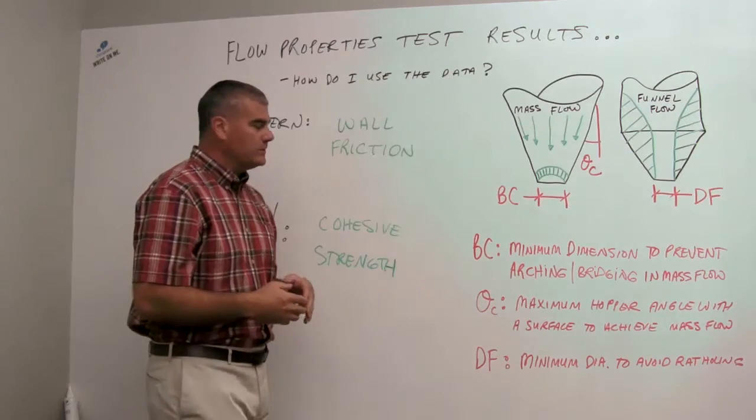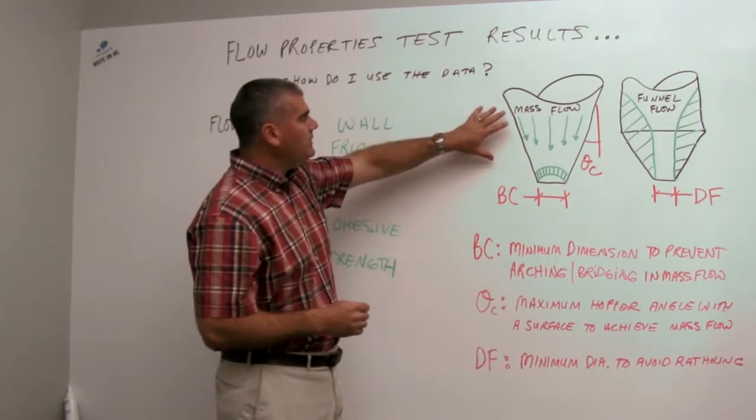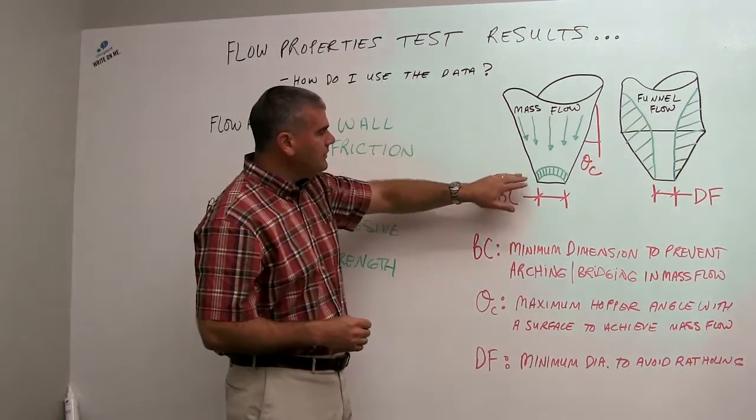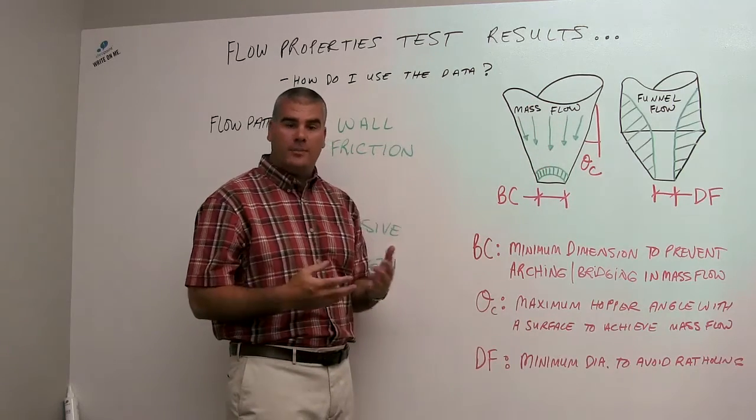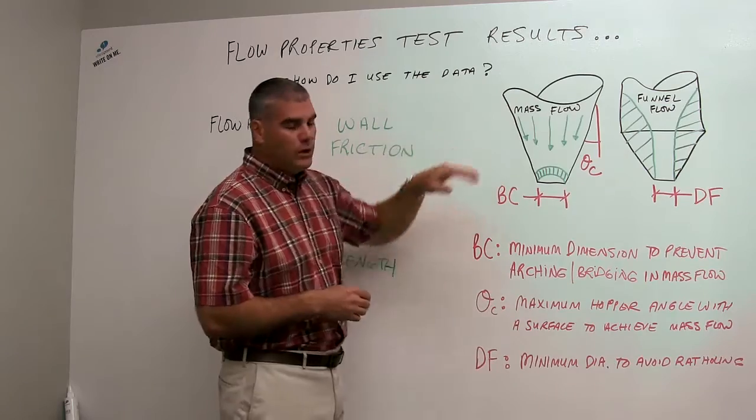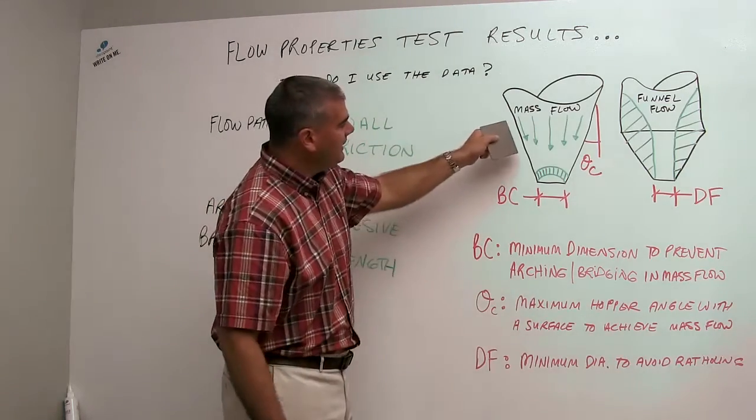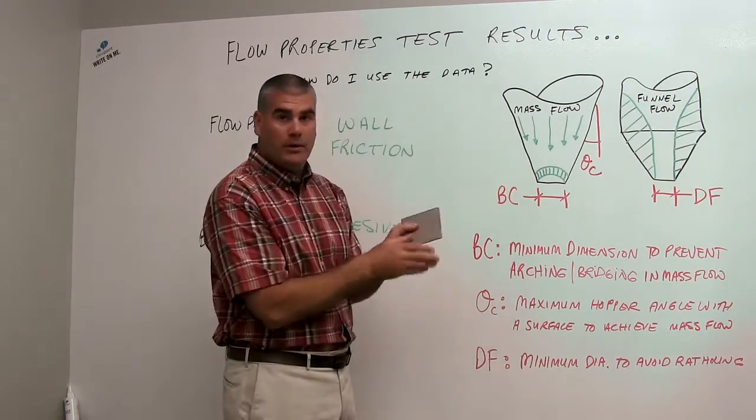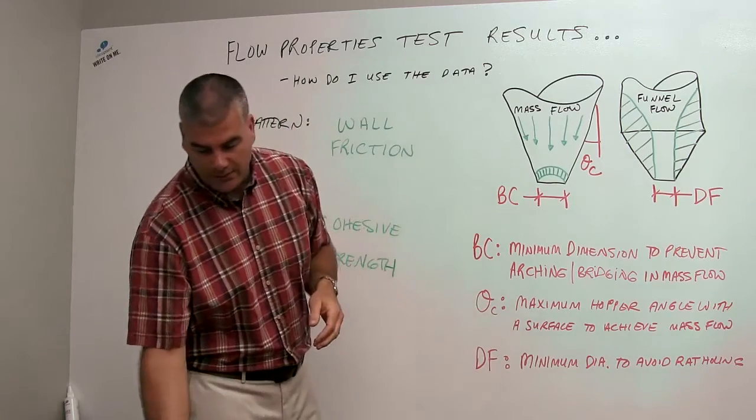So with those surfaces, we would look at, can we achieve flow of those materials against the wall of a hopper? We call that type of flow pattern mass flow, where the bulk material is actually sliding against the surface of the hopper, giving us a first-in-first-out flow.